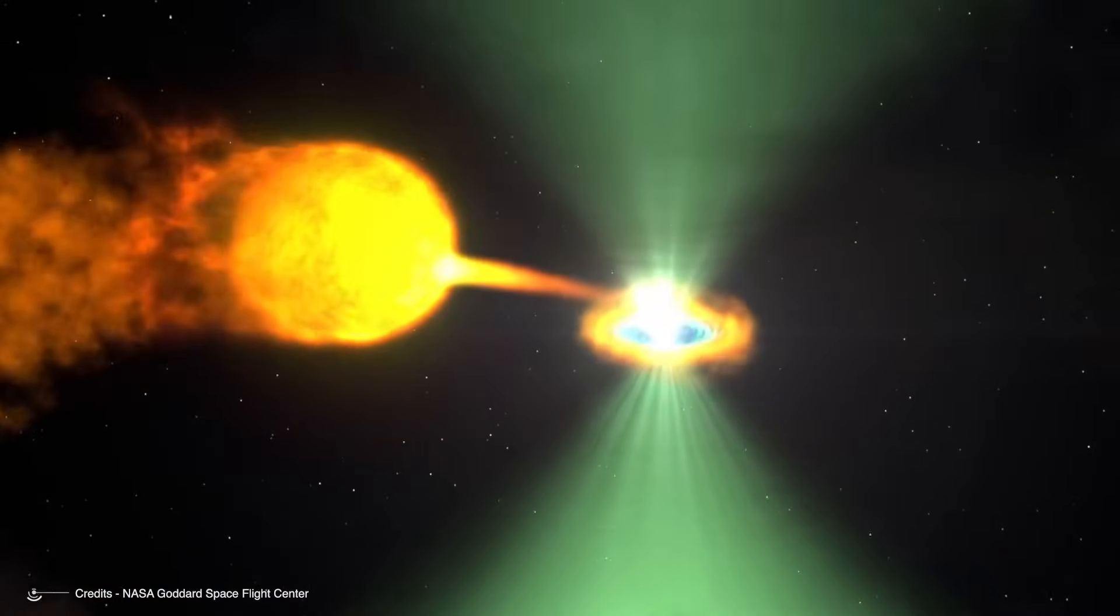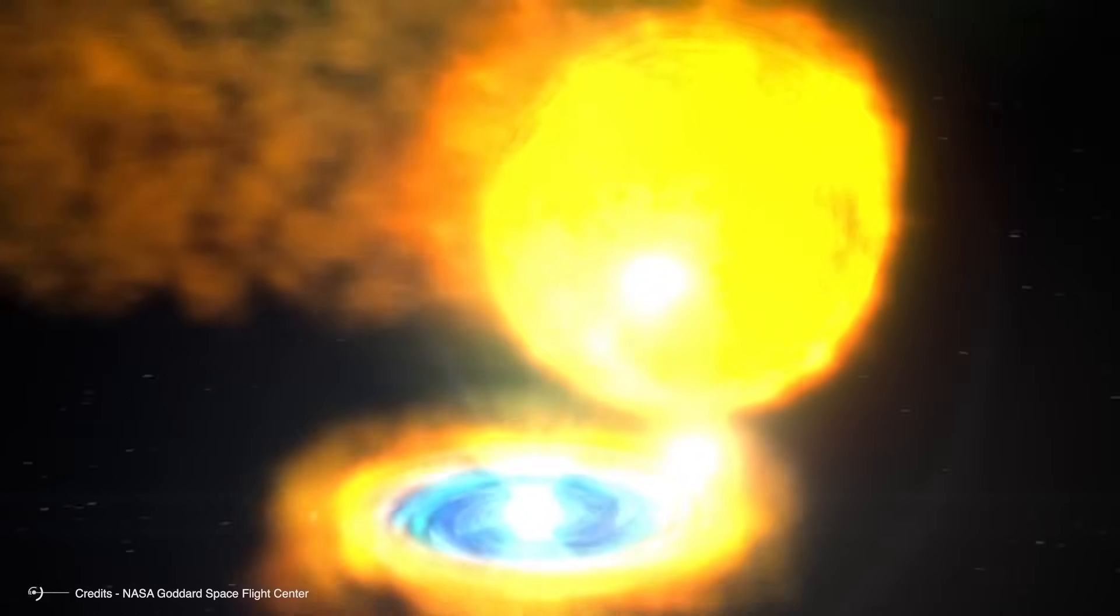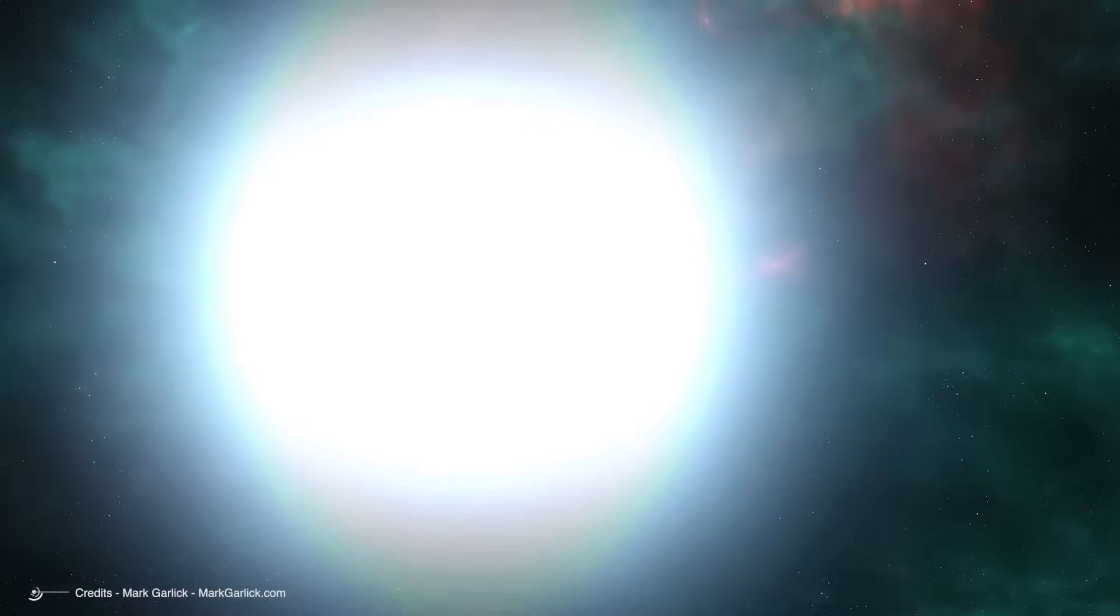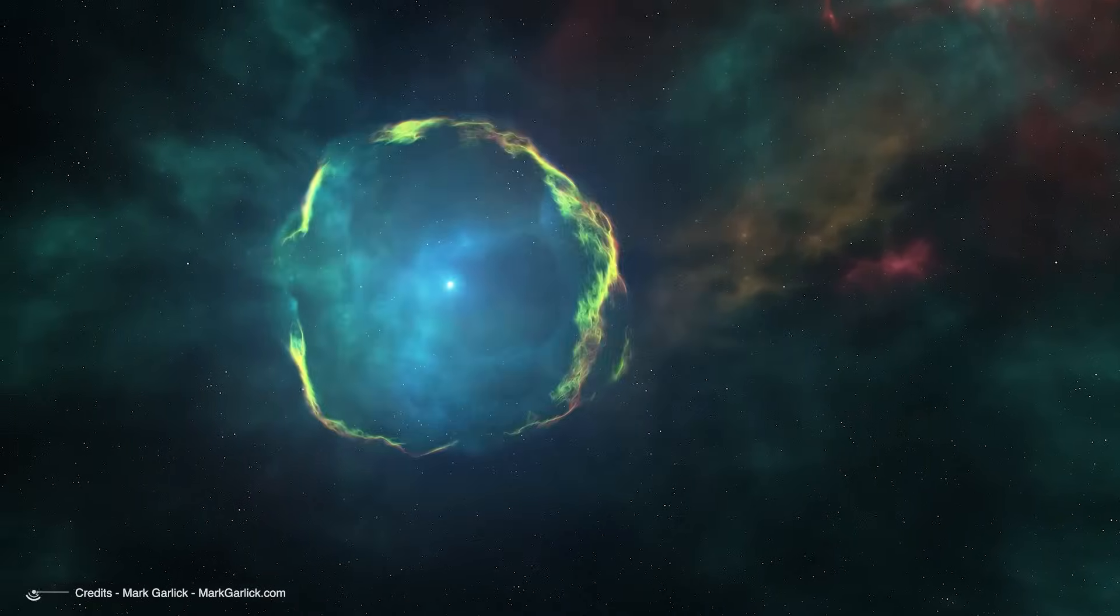When J0952-0607 finally crosses the TOV limit, the collapse will be one of the most energetic events in the observable universe. Unlike supernovae, which unfold over seconds or minutes, a neutron star collapse happens almost instantaneously.